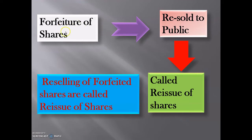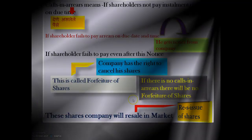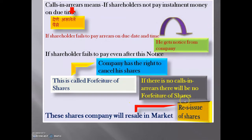After forfeiture of shares, the cancelled shares must be resold in the market. When these shares are again resold to the public, that is called reissue of shares. Reselling of forfeited or cancelled shares is called reissue of shares.